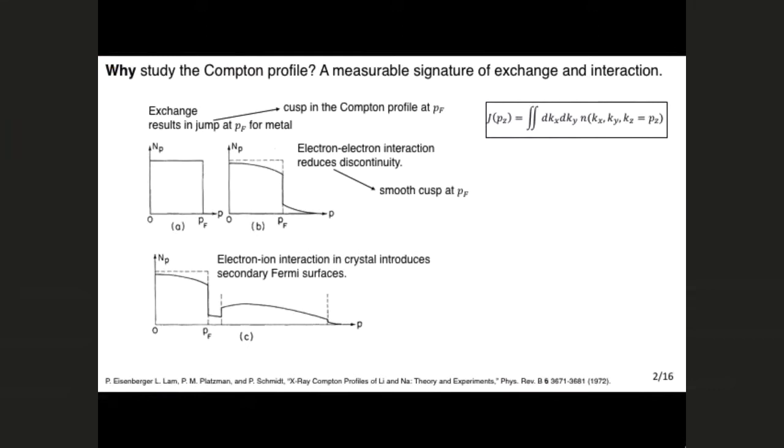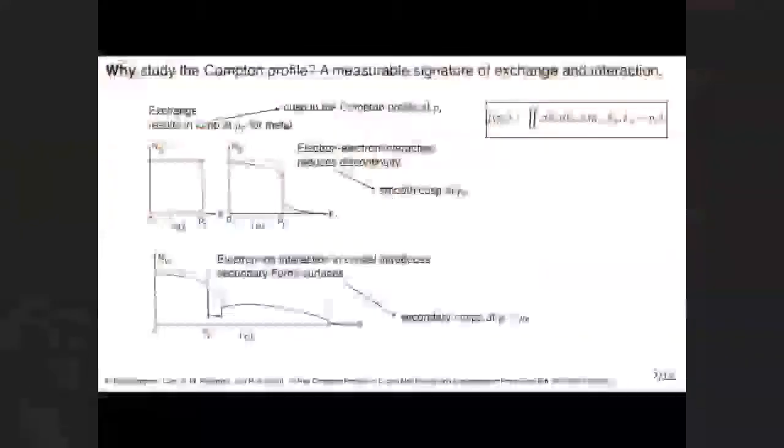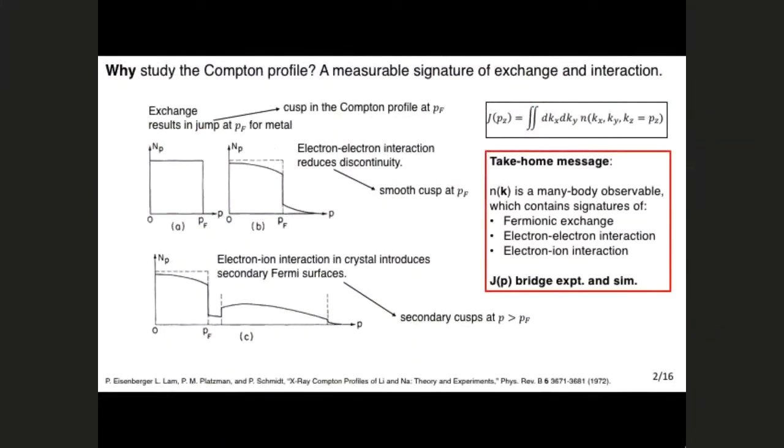Last but not least, if you consider electron-ion interaction, in particular if you put in a crystalline lattice, your electron can scatter off of the crystalline lattice in what's called a Umklapp process, that will bring them up to secondary Fermi surfaces. So you introduce these secondary discontinuities, which will show up as secondary cusp points in the Compton profile. Here really is that the three-dimensional momentum distribution is a many-body observable that contains signatures of exchange and correlation. Further, it is a measurable quantity, the Compton profile. So in this sense, it bridges experiment and simulation. It's nice in QMC to calculate something that experiments can measure in addition to energy, which is hard.